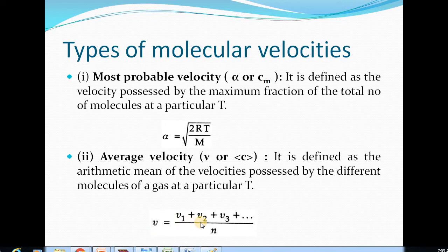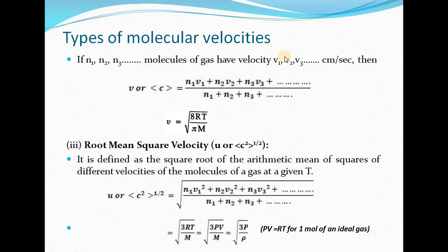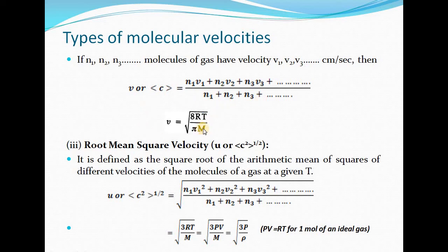The average velocity is given by (V1 + V2 + V3 + ...) divided by n. If n1 molecules possess velocity V1, n2 molecules possess velocity V2, and n3 molecules possess velocity V3, then average velocity equals (n1·V1 + n2·V2 + n3·V3 + ...) divided by the total number of molecules. The mathematical expression is v = √(8RT / πm).